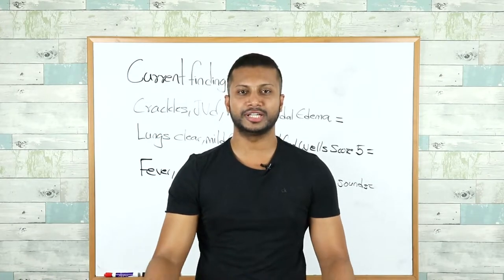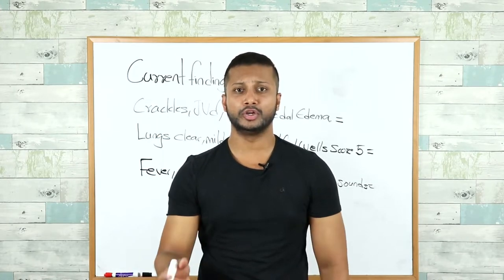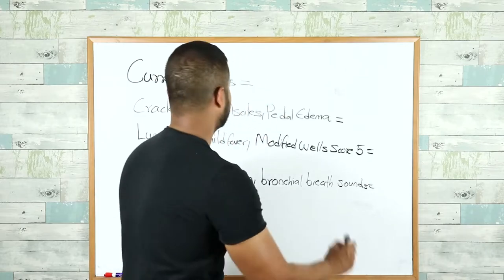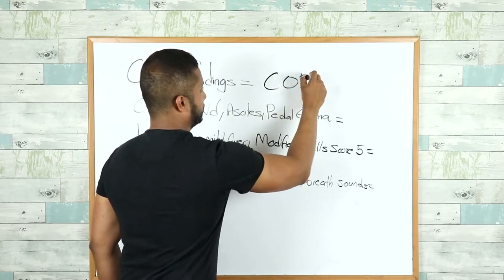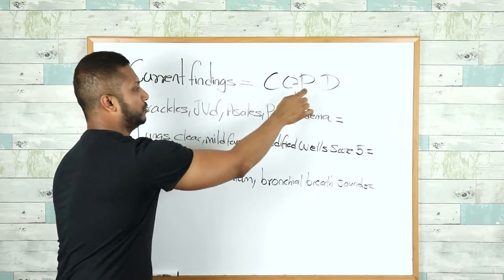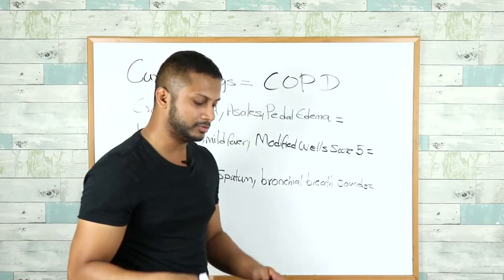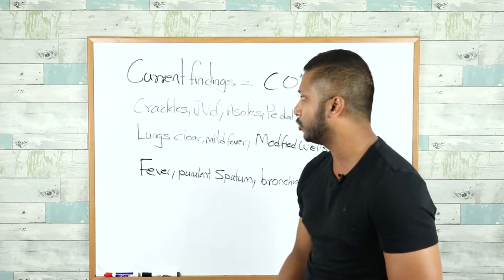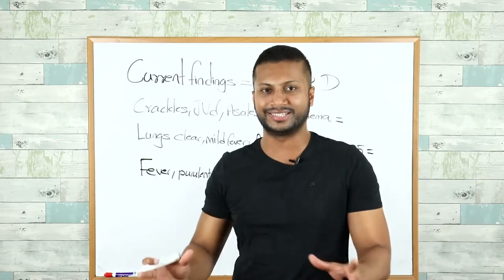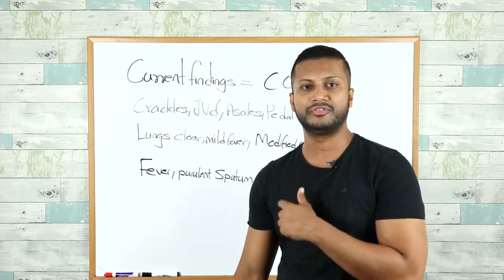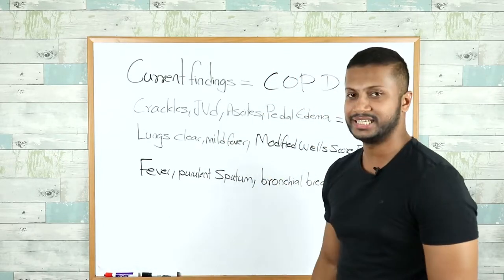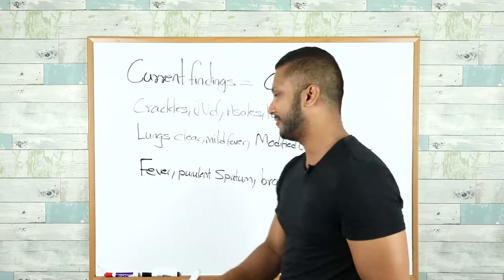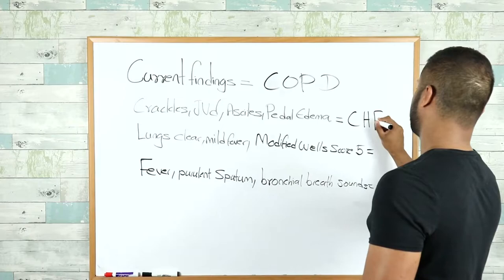Based on the history and physical examination findings, your diagnosis is most likely COPD exacerbation. However, let's think of other things that could also be going wrong. For instance, if the patient had bilateral bibasilar crackles, elevated jugular venous distension, ascites, and pedal edema, this would be pointing more towards CHF exacerbation.